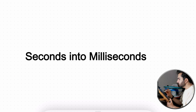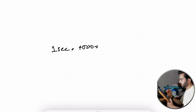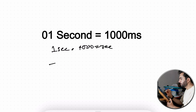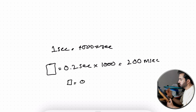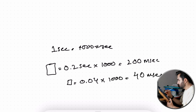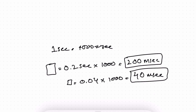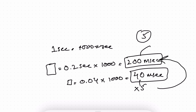In exams, these values may appear in milliseconds. One second equals 1000 milliseconds. So one big box equals 0.2 seconds, which means one big box equals 200 milliseconds. Similarly, one small box equals 0.04 seconds, which equals 40 milliseconds. Since one big box has 5 small boxes: 40 × 5 = 200 milliseconds. This confirms our values.